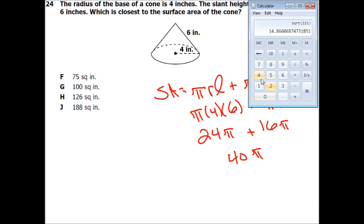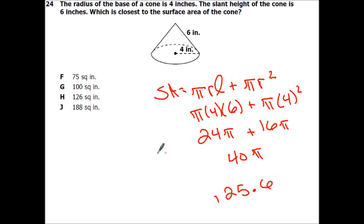And we can bring up our calculator. Remember, we use 3.14 for pi. So we're going 40 times 3.14, 125.6. And they just rounded it. Because remember, we said closest.